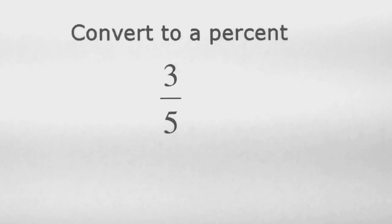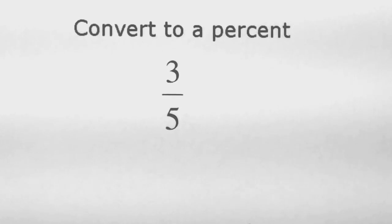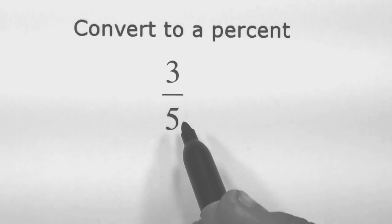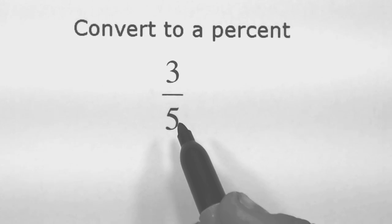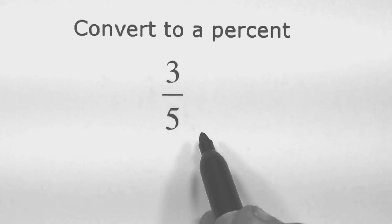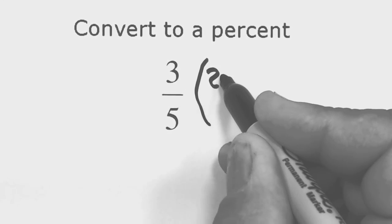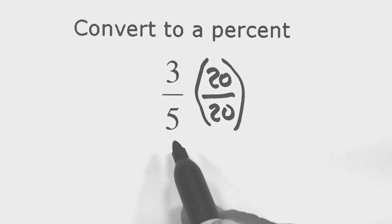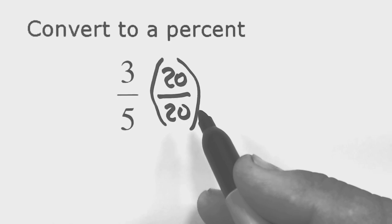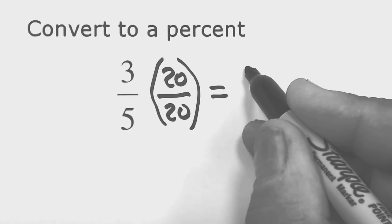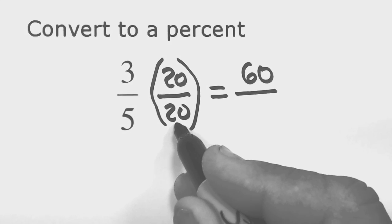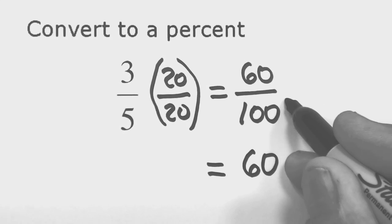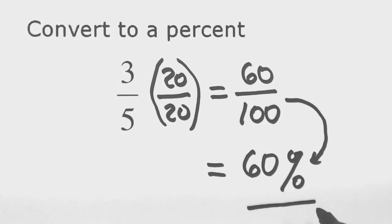For other fractions where the denominator can be easily multiplied to reach a hundred, use the same relationship. For three-fifths: multiply five by twenty to get one hundred, so multiply both top and bottom by twenty. Upstairs: three times twenty is sixty. Downstairs: five times twenty is one hundred. Now take the over one hundred and trade it in for the percent sign — sixty percent.